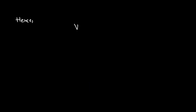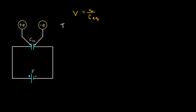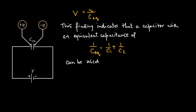Hence, V equals V1 plus V2, which equals Q over C1 plus Q over C2, which equals Q over C_equivalent. This finding indicates that the reciprocal of C_equivalent equals the sum of the reciprocals of the capacitance of each capacitor, and this equivalent capacitor can be used in place of two capacitors connected in series.